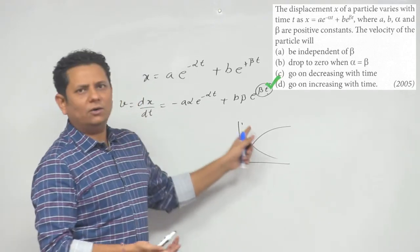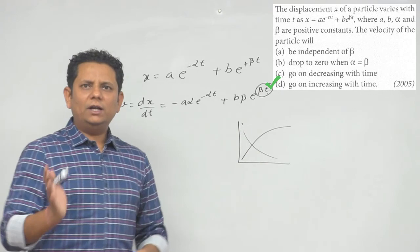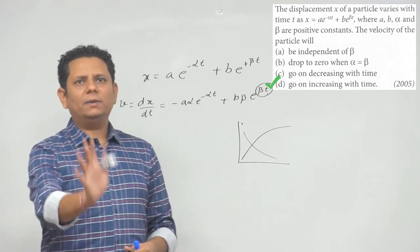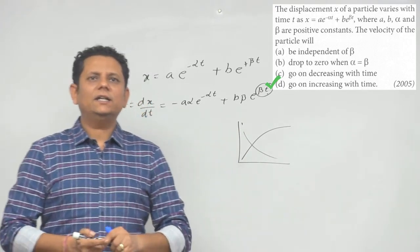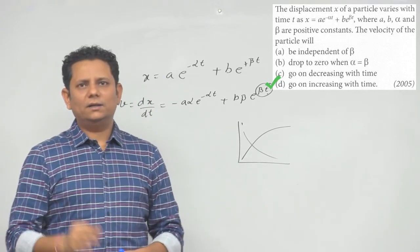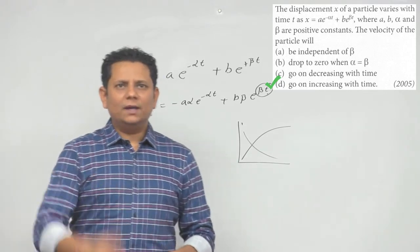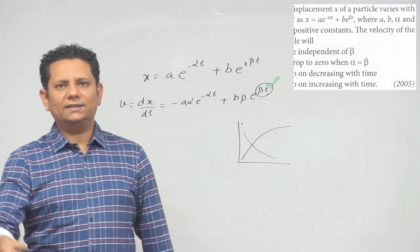यहाँ पे value आपकी alpha, beta और a, b की value पे भी depend करेगा, but out of the four options, option number d is the most appropriate option. So option number d would be the right answer.